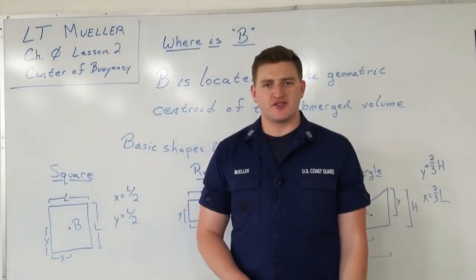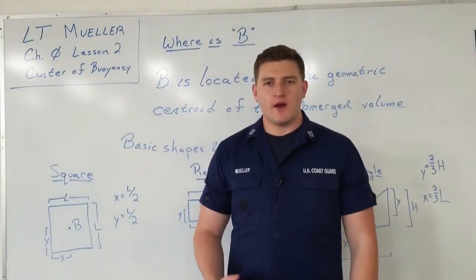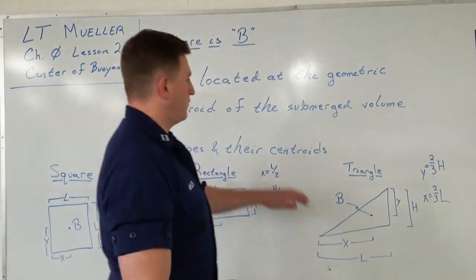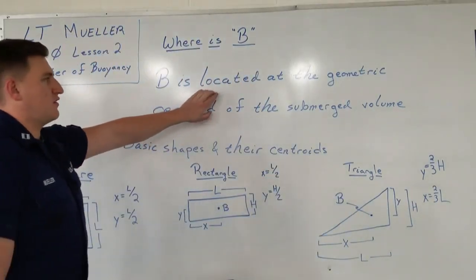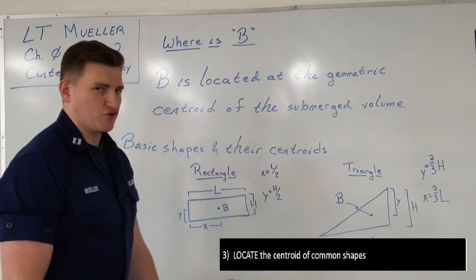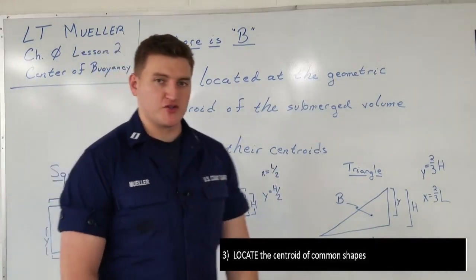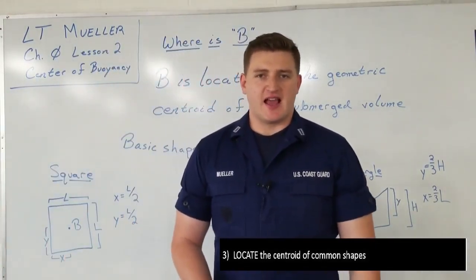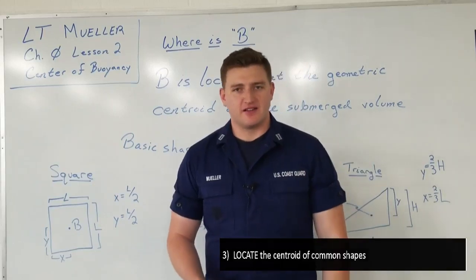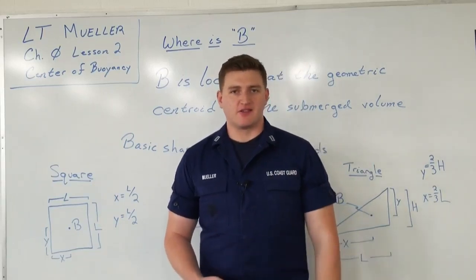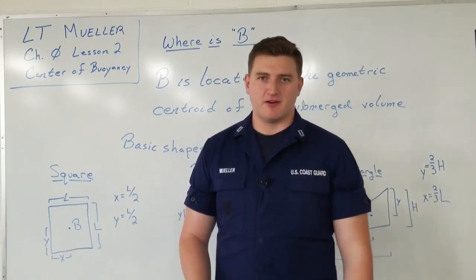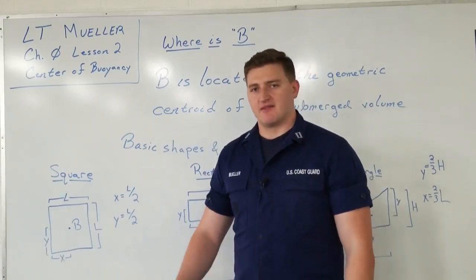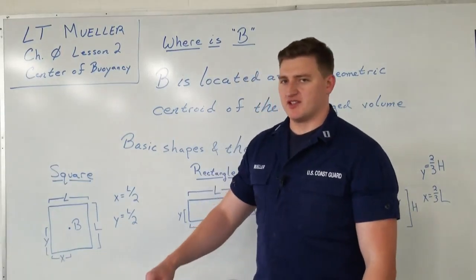Now that we see how pressure acts, where is B — where is the center of buoyancy? The center of buoyancy is located at the geometric centroid of the submerged volume. In naval architecture and actual ship stability, this is a very difficult concept to measure precisely, especially with pen and paper. However, we can use basic shapes and models to get a good approximation.